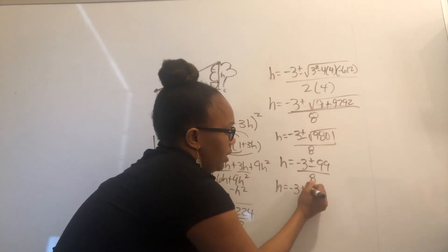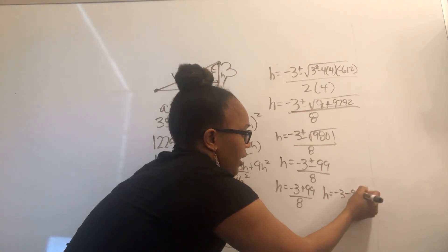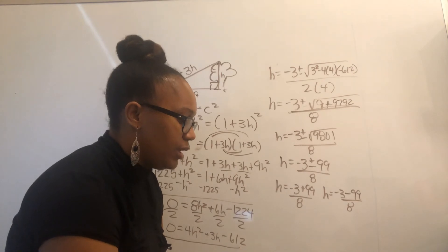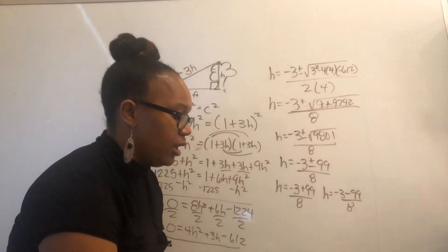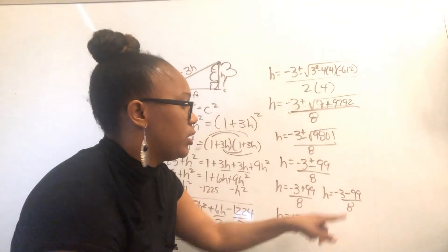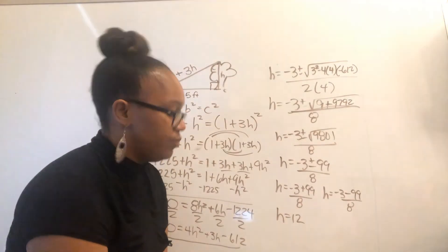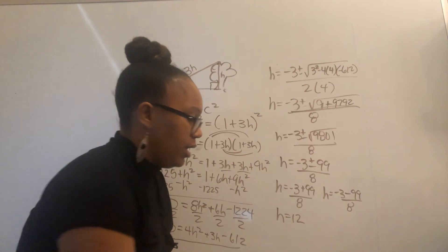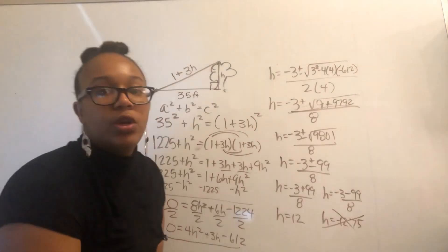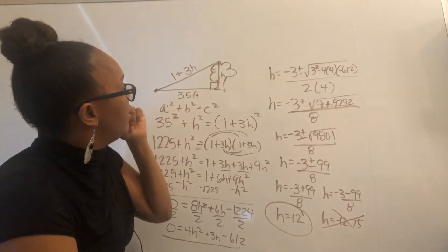We get two separate answers: H equals (negative 3 plus 99) over 8, which is 96 over 8, which equals 12. And H equals (negative 3 minus 99) over 8, which is negative 102 over 8, giving negative 12.75. But you can't have a negative height, so we rule that out. The height of the tree is 12 feet.